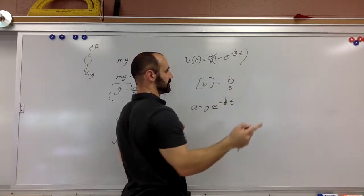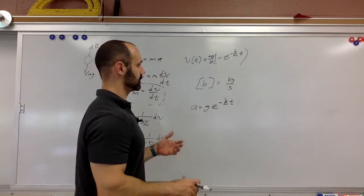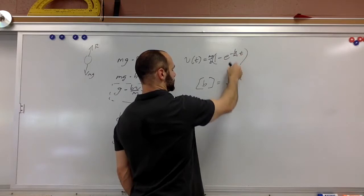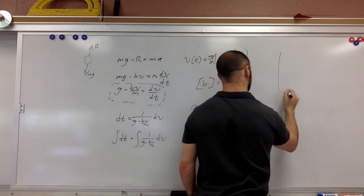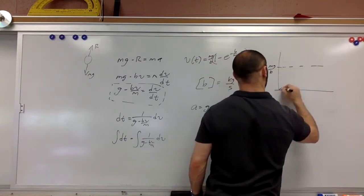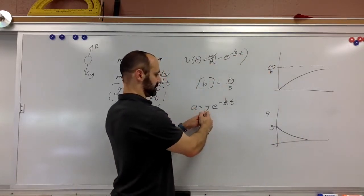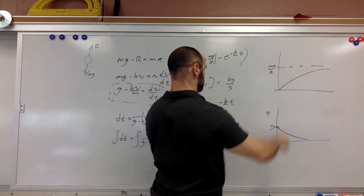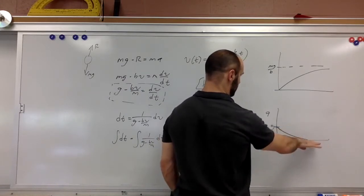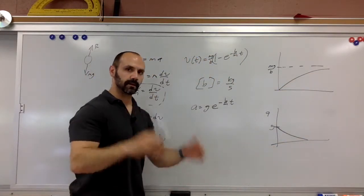At the initial time velocity is zero, which makes sense. As time goes on, velocity approaches mg over b — the terminal velocity — because the exponential term approaches zero, making the bracket approach 1. The velocity-time graph rises toward the asymptote mg over b; the acceleration-time graph starts at g and decays toward zero. In general: if the equation is just e to the negative something, it decays to zero; if it's 1 minus e to the negative something, it rises to its coefficient.